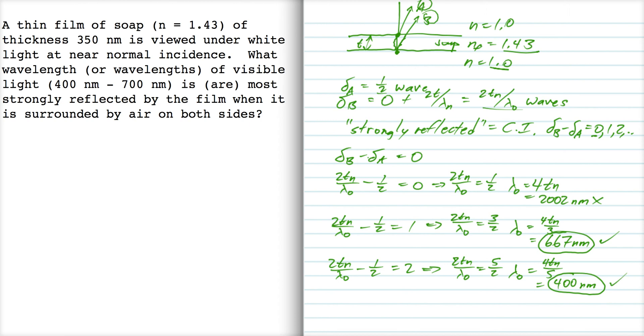Now, my guess is we're not going to get any more, but let's just confirm that. That's two t over lambda-naught minus a half is equal to three. That gives us two t over lambda-naught is equal to seven halves. Lambda-naught is four t over seven, which is two hundred and eighty-six nanometers. And that's a bad one.